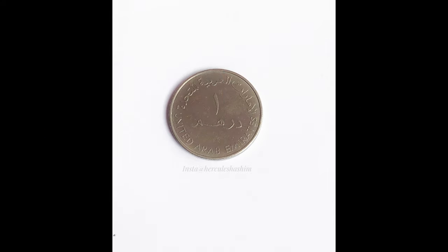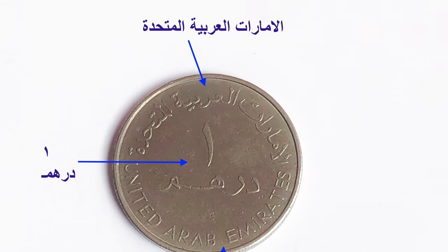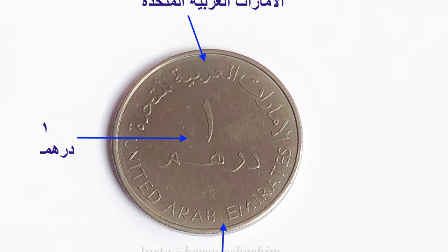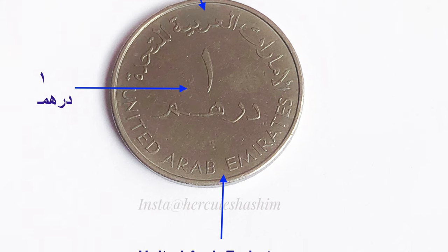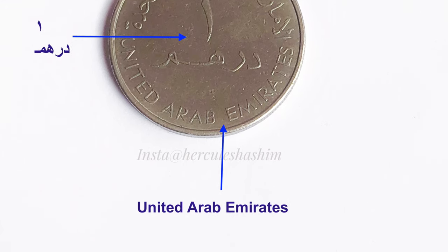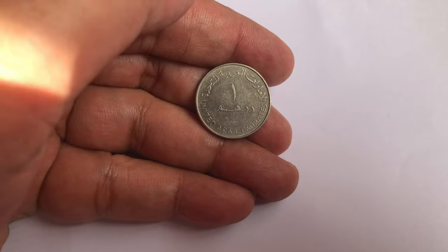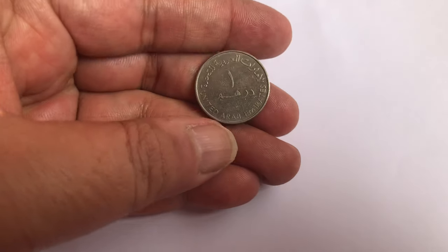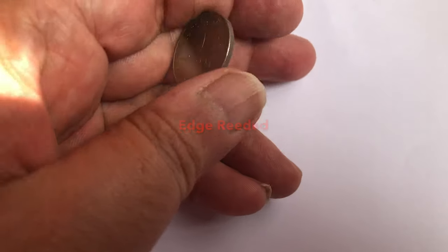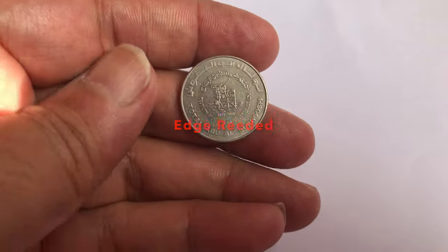This coin's front side is a normal coin, same to same. In Arabic and English, United Arab Emirates is written on it. The edge of the coin is reeded, which is the same as all other coins.